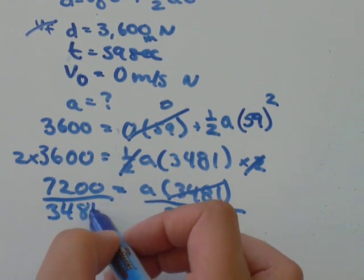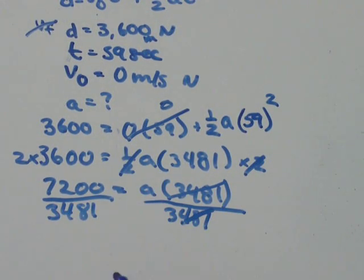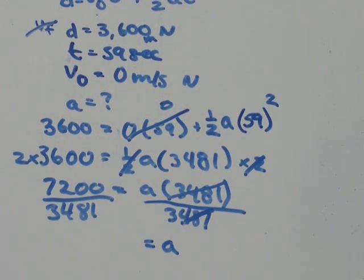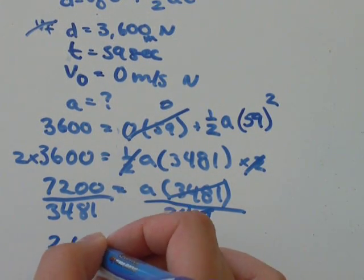Do the same thing to the other side. And we'll be left with a equals 7,200 divided by 3, 4, 8, 1, I get that's equal to about 2.07.